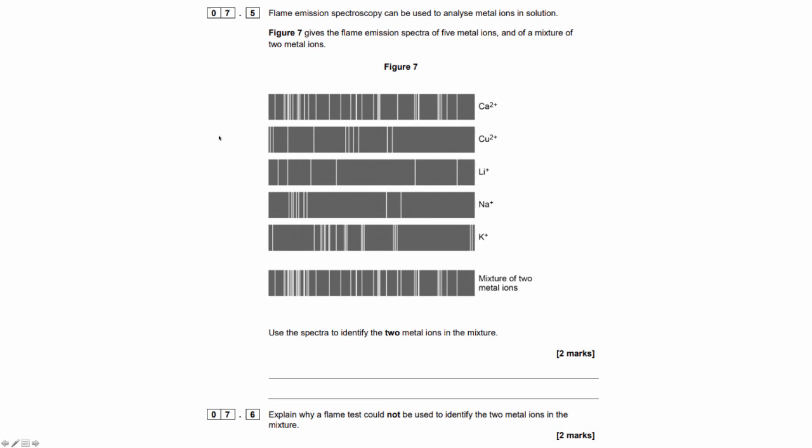A past paper question, which gives the emission spectra of 5 metal ions and an unknown, which tells us we have a mixture of 2 metal ions. And then what we do is we match up the number and position of those lines. And we can see by matching these lines that we have a positive for calcium. And we can also see that we have lines that are in the same place as sodium.